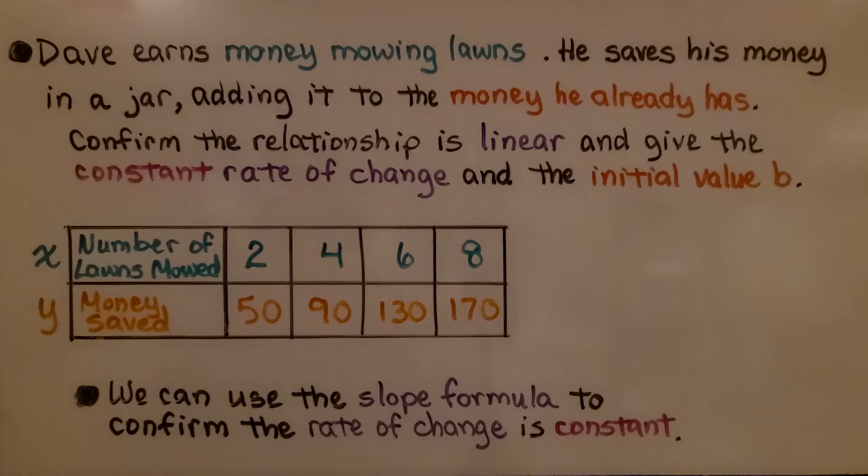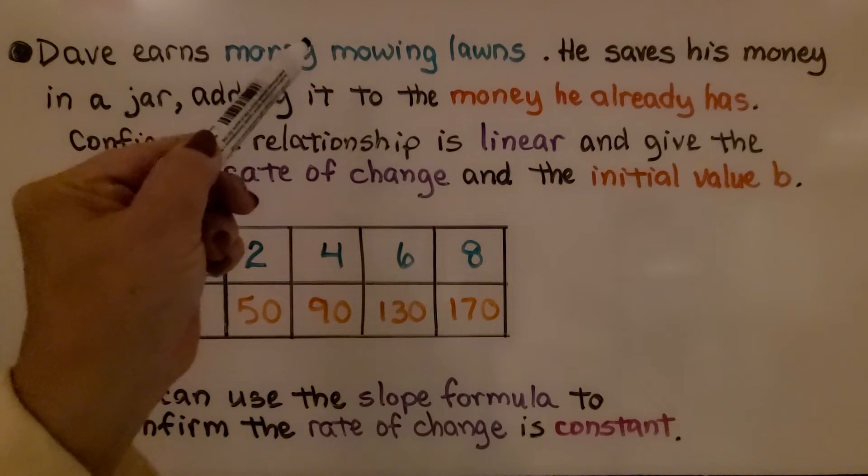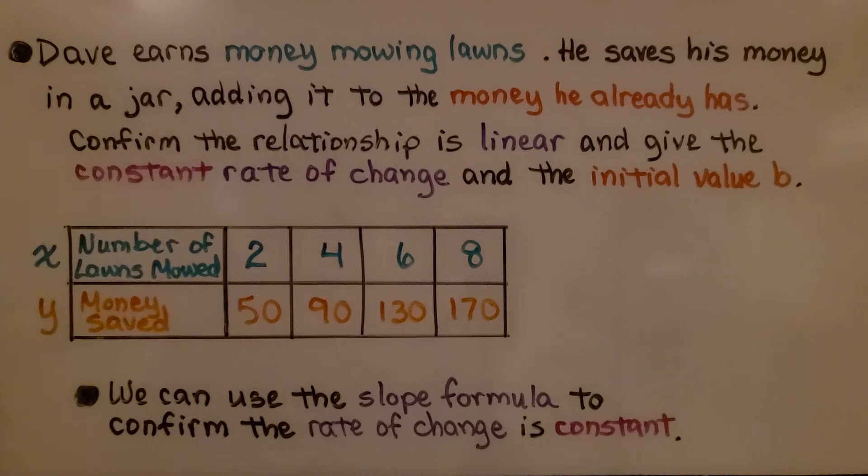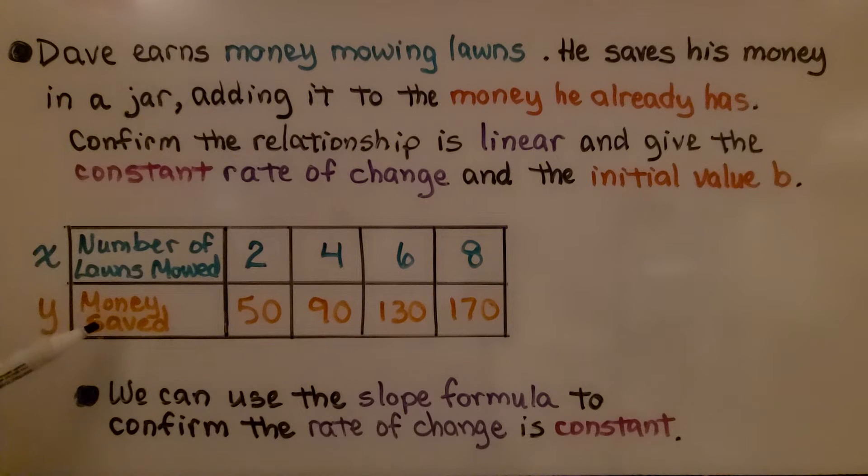Here's our problem. Dave earns money mowing lawns. He saves his money in a jar, adding it to the money he already has. Confirm the relationship is linear and give the constant rate of change and the initial value b. Now the initial value b is going to be the money he already has before he even starts mowing lawns, when he's mowed 0 lawns. They're giving us a table. The number of lawns mowed, that's our x value: 2, 4, 6, and 8. And the amount of money he's got saved is our y value: 50, 90, 130, 170.